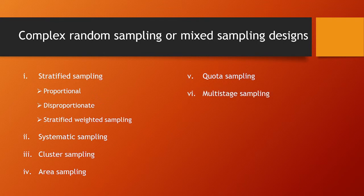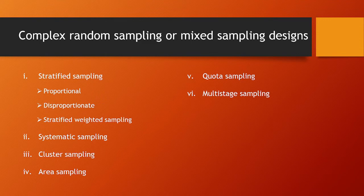Then comes multi-stage sampling. The population is regarded as made up of a number of first stage sampling units, each of which is made up of second stage units, and so on. The sample is refined at each stage until the desired size is reached. That is known as multi-stage sampling.